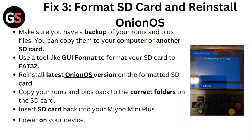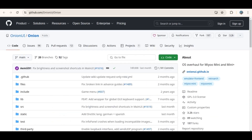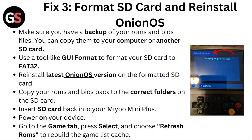Fix three: Format SD card and reinstall your OS. Make sure you have a backup of your ROMs and BIOS files — you can copy them to your computer or another SD card. Use a tool like GUIFormat to format your SD card to FAT32. Reinstall the latest Onion OS version on the formatted SD card. Copy your ROMs and BIOS back to the correct folders on the SD card. Insert the SD card back into your Miyoo Mini Plus, power on your device, go to the game tab, press select, and choose refresh ROMs to rebuild the game list cache.